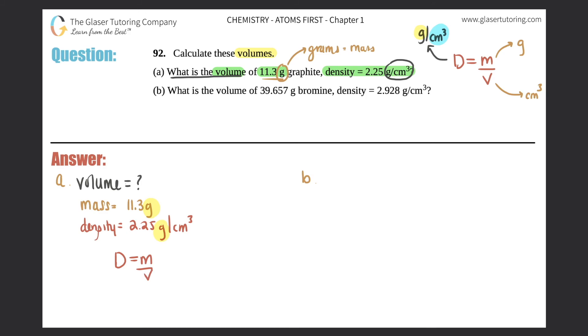We can just plug in and play. D equals m over V, so we get 2.25 equals 11.3 divided by x. This is a straight cross multiplication problem - the 2.25 will multiply by x, and this will multiply by 11.3. Remember, this is over one, so it might be easier to see that way.